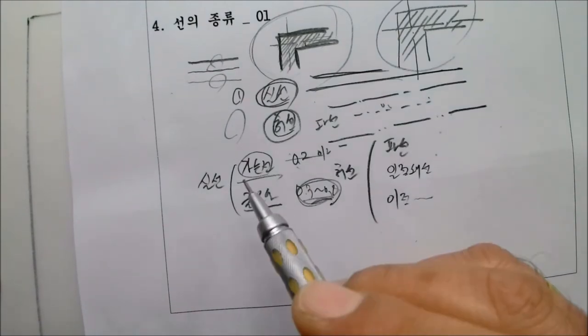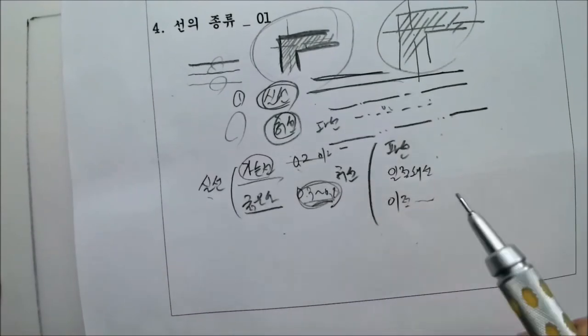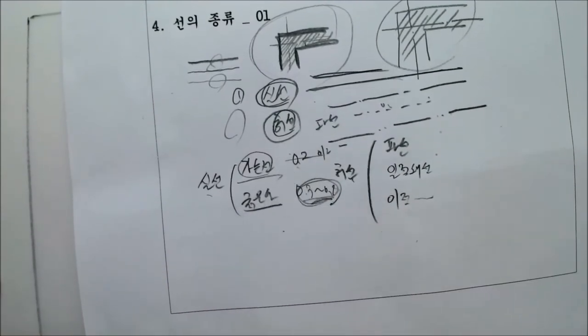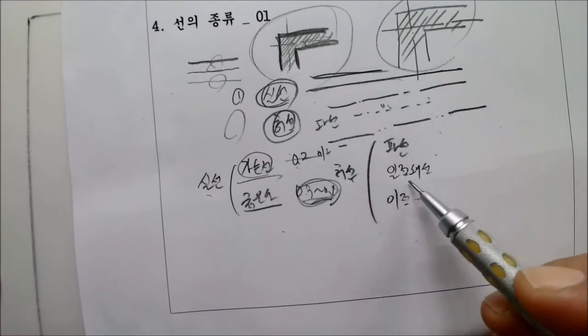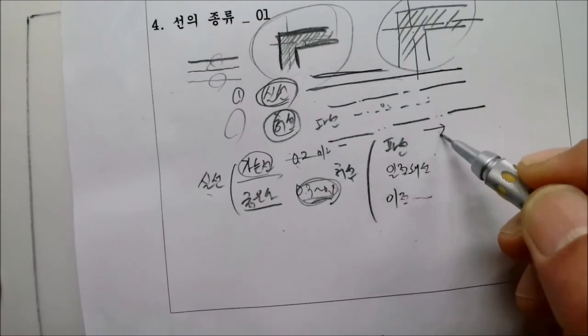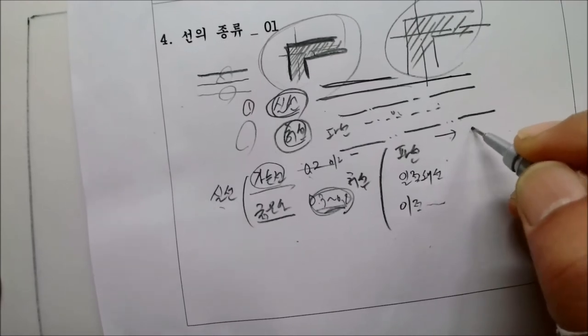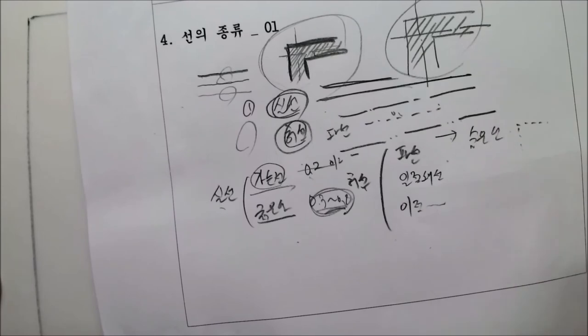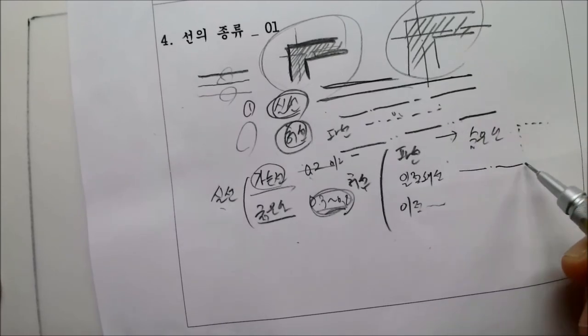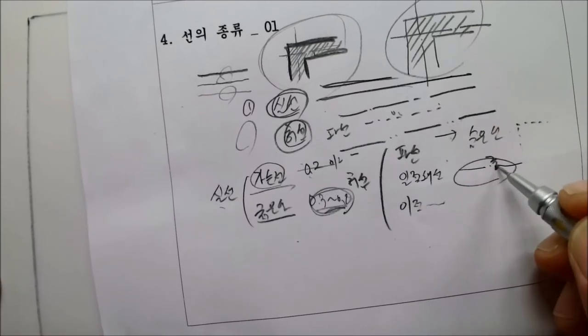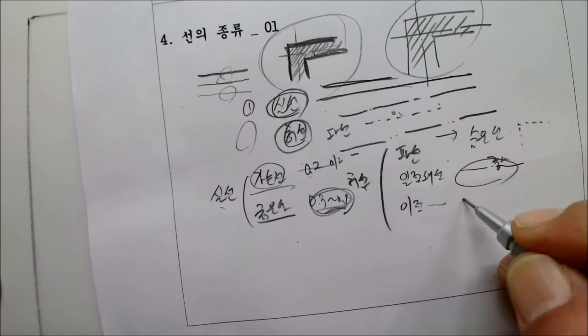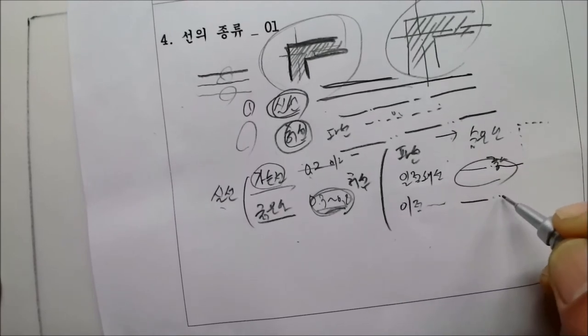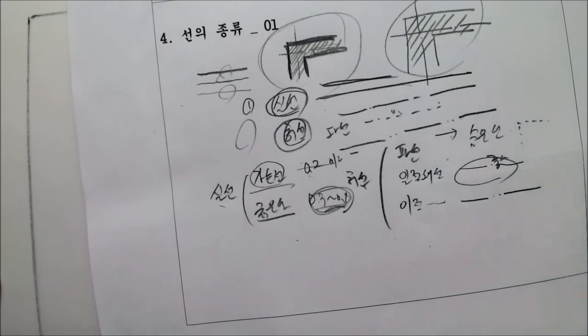자 한번 더 그냥 지금 이 시간에는 실선은 헐선가 있는데 실선은 가는선 가는선 그 다음에 굵은선 자 허선은 파선가 1.3선 자 파선은 언제 그렇죠 숨은 있는 거 숨은선 이해하시겠나요? 자 1.3선은 어떻게 중심선 자 2.3선은 뭐다? 자 2.3선 2.3선은 가상선